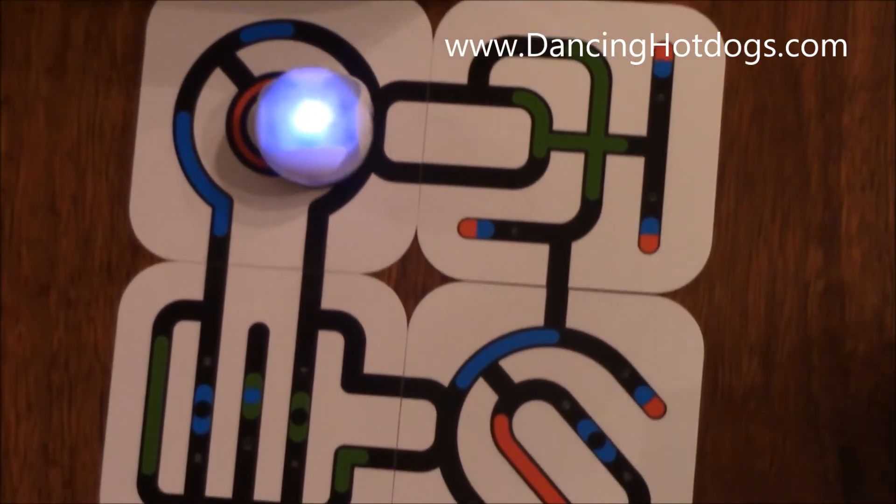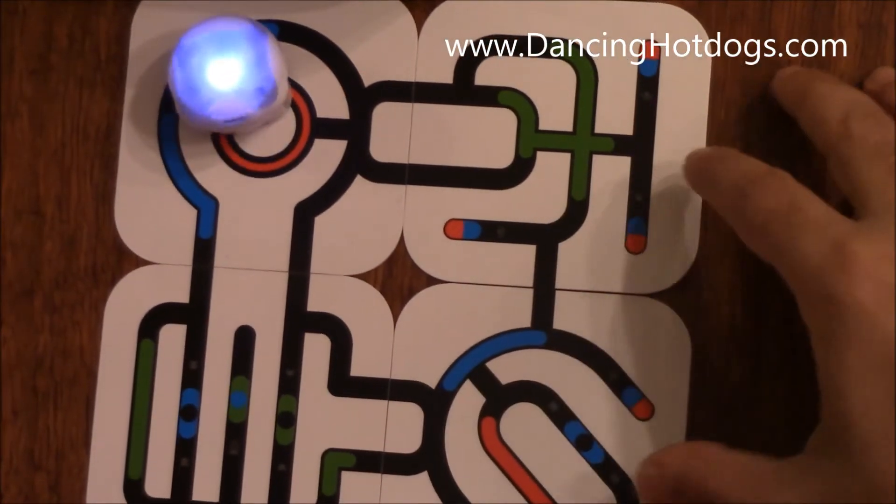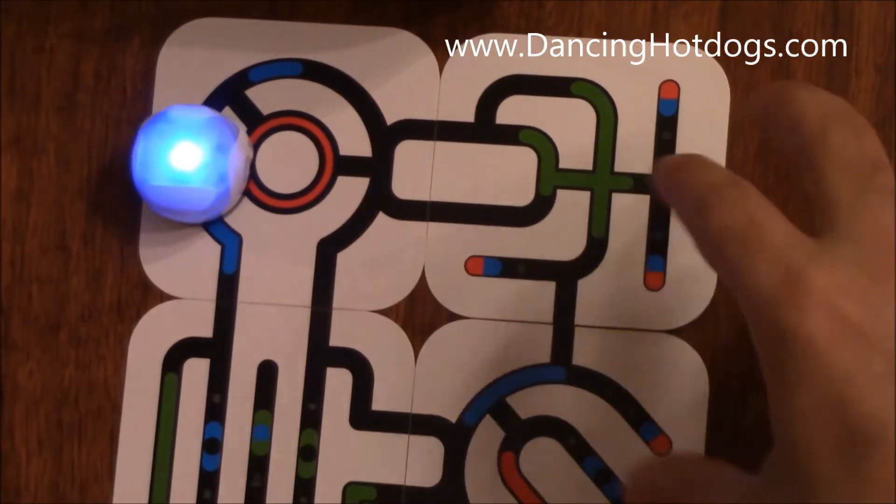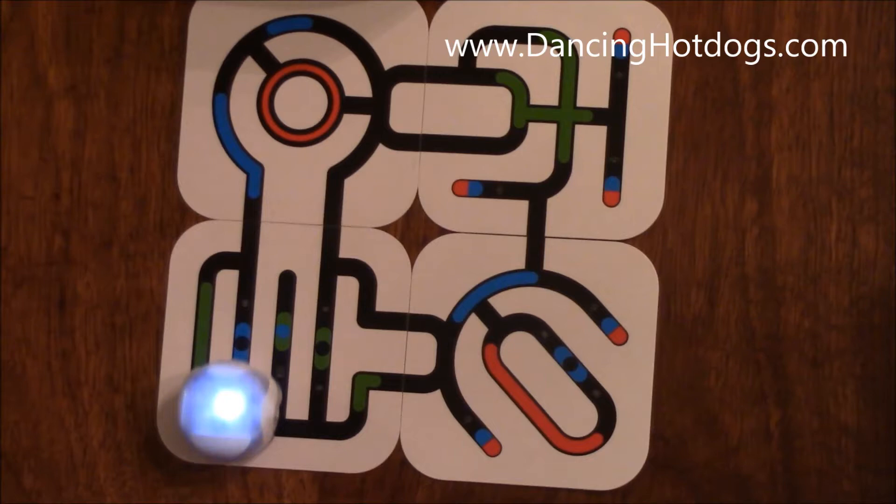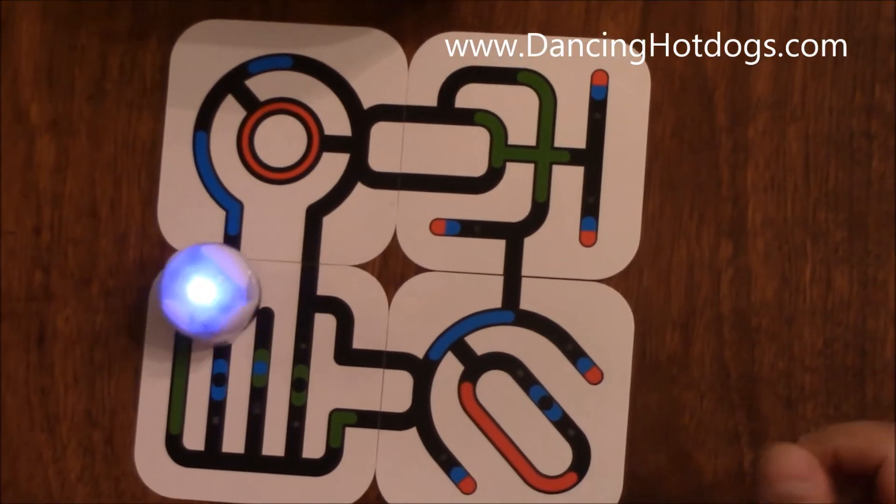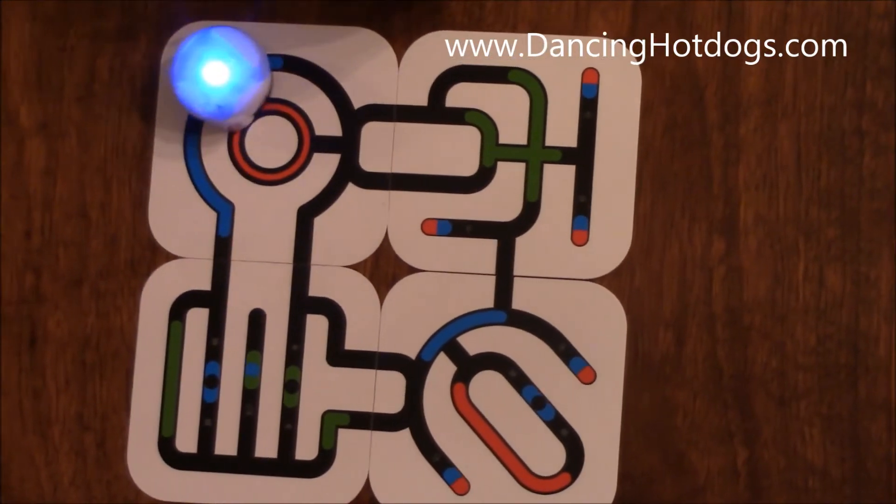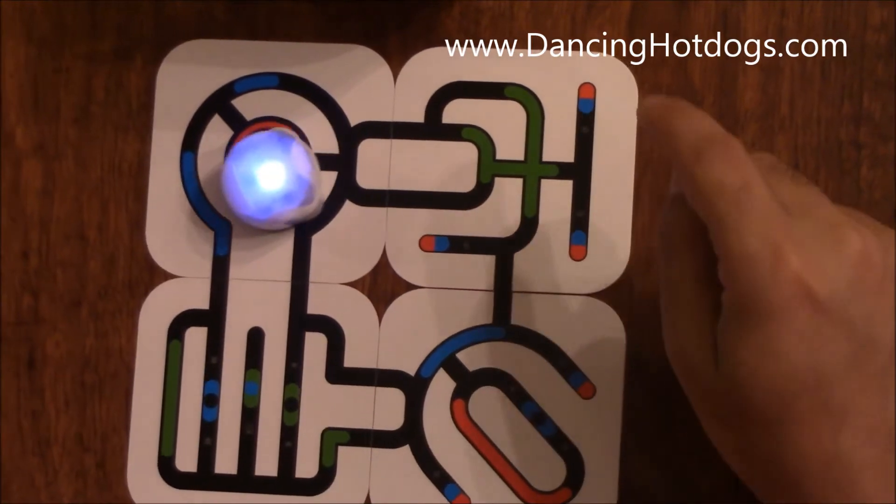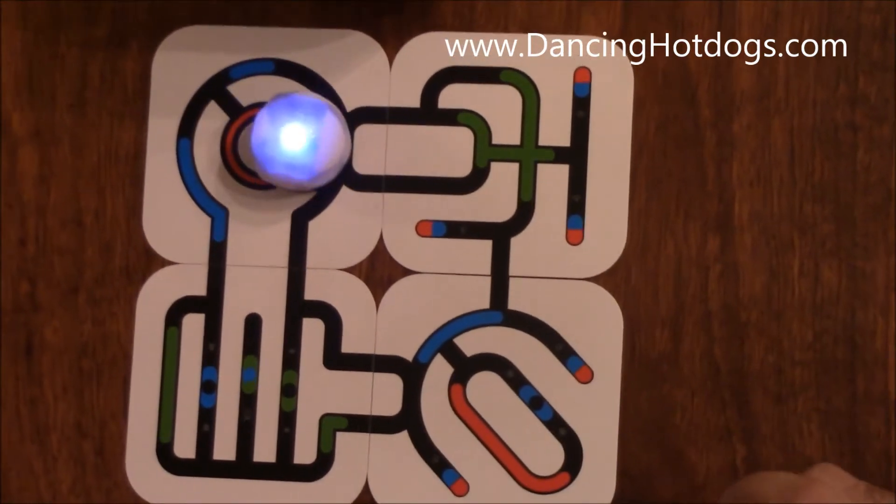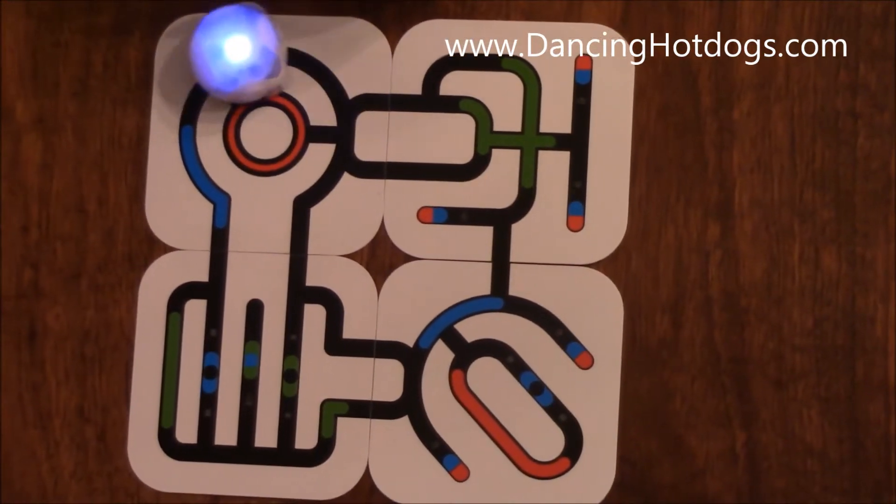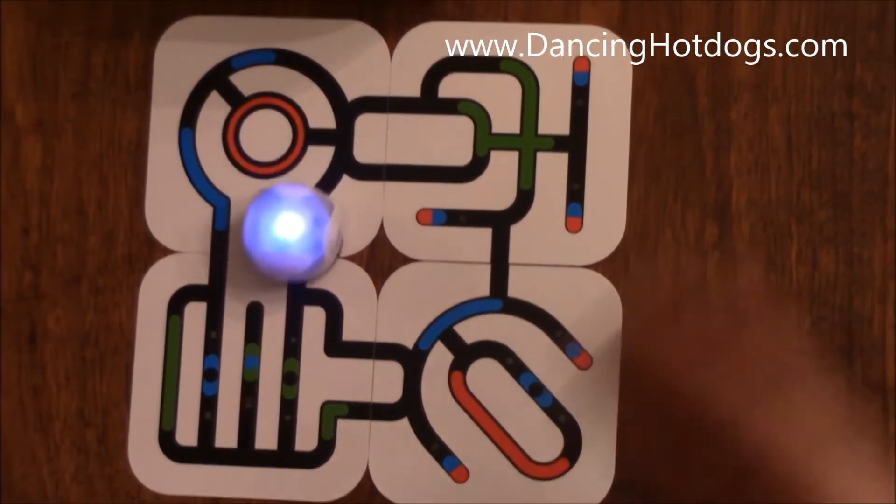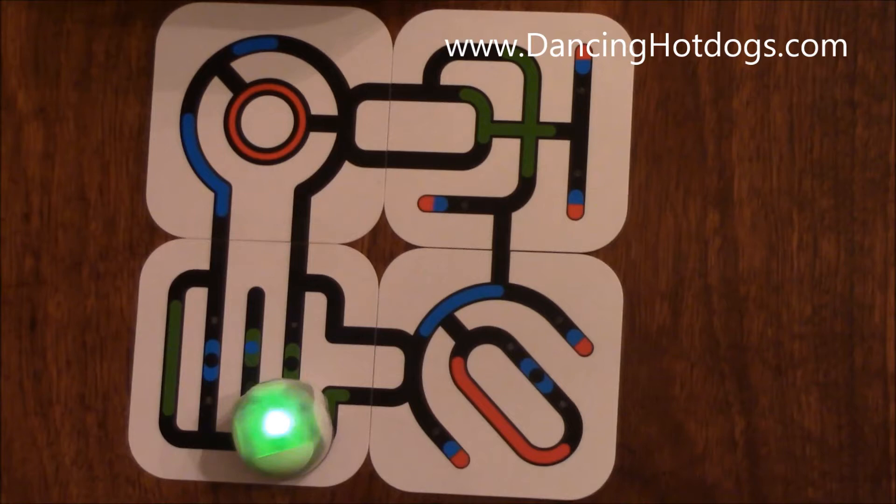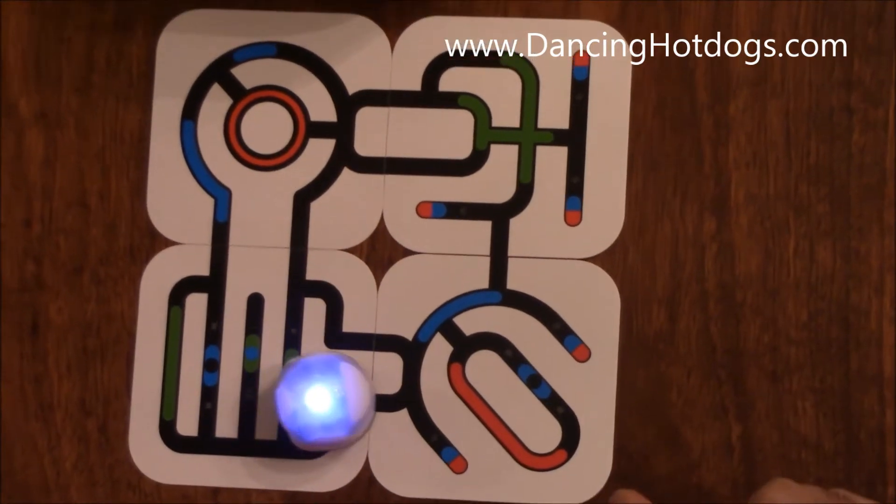The great thing about Ozobot is that you don't just have to use these cards. You can create your own tracks, you can create your own codes using markers and pens. As long as you use the specific colors that Ozobot uses - red, blue, green and black - you can have endless fun customizing tracks, making it do different tasks, and even using more than one Ozobot together.